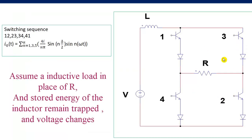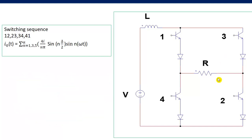When the load is made inductive, there is no path to release the inductive stored energy. Suppose three and four were on and the inductor across the load got charged. After that, one and four are made on. The current will flow in the new direction, but there is nothing to discharge the stored inductive energy, so the inductor voltage will keep on changing. This is the reason that the output current waveform remains constant but the voltage waveform changes.